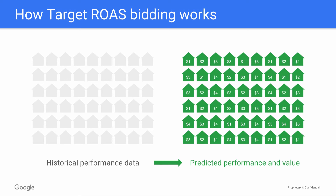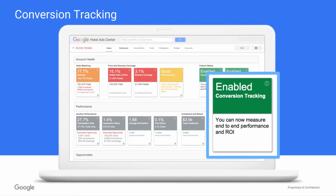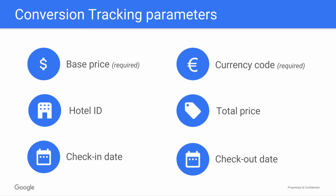How does Target ROAS know what to bid on a property? A good part of it is analyzing conversion tracking data to understand which properties are enabling a strong return on ad spend. In order to use Target ROAS bidding, you must have conversion tracking enabled and be passing booking values to Google. You can check if you've enabled conversion tracking in your Hotel Ads Center account on the Home tab. Additionally, we recommend working with your technical team to ensure you've set up certain parameters in your conversion tracking code. These parameters help us understand the booking value of a given property so that we can optimize your bids accordingly against your Target ROAS goals.